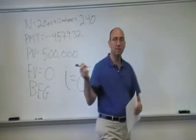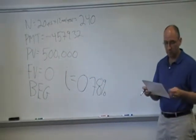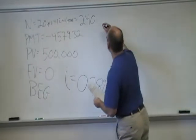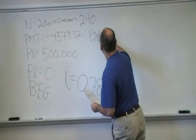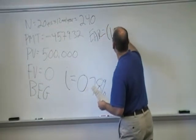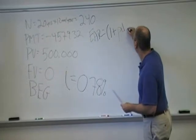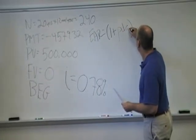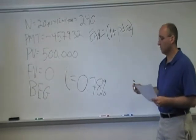So now that we have the monthly rate, we want to convert that into an EAR. And remember, the EAR is equal to 1 plus the period rate. In this case, that's the monthly rate.